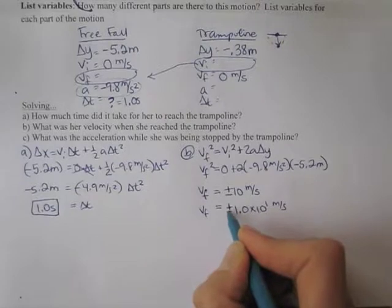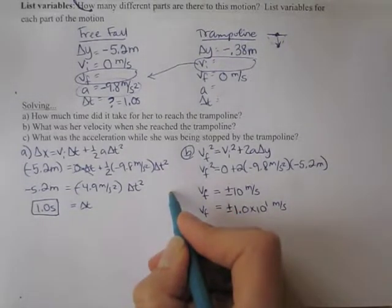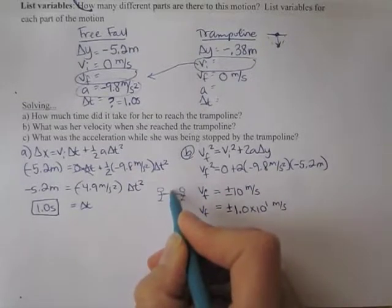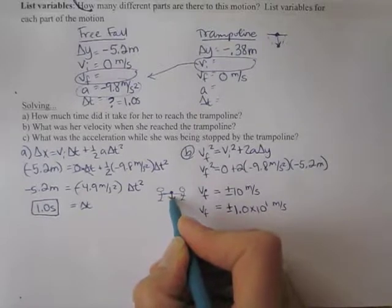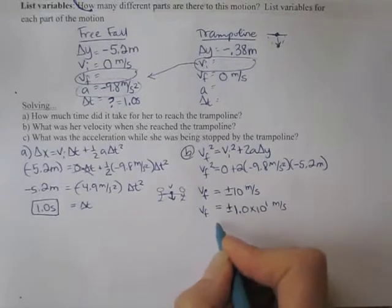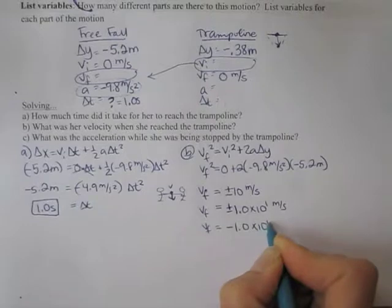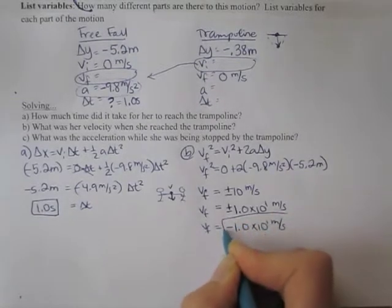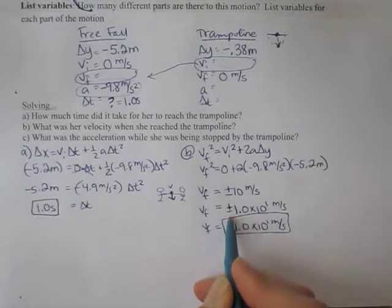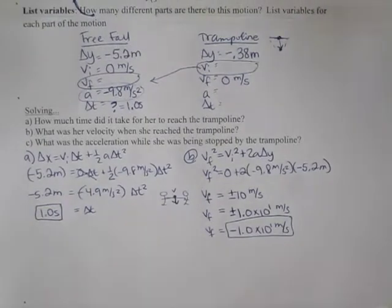Now we have to think about which of these answers make sense for our situation. So the velocity when reaching the trampoline, here's the fireman holding the trampoline, the child is moving downward. So that is a negative velocity. So the answer we want is the negative. So the answer is negative 1.0 times 10 to the 1 meters per second. Okay, so watch out for that. You need to remember that when you take the square root, there's two answers, and you need to choose the one that fits the situation.